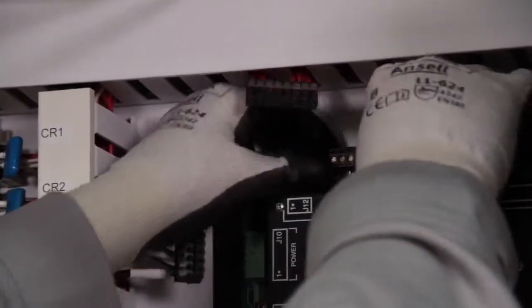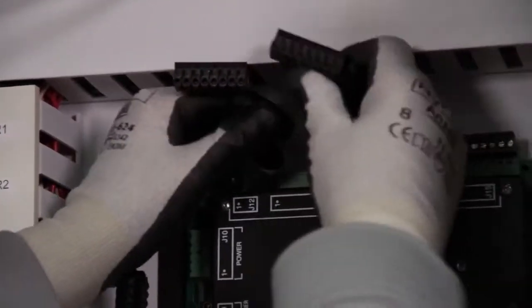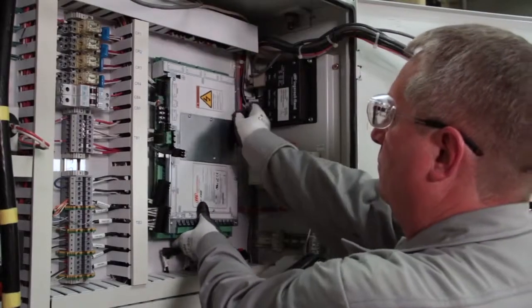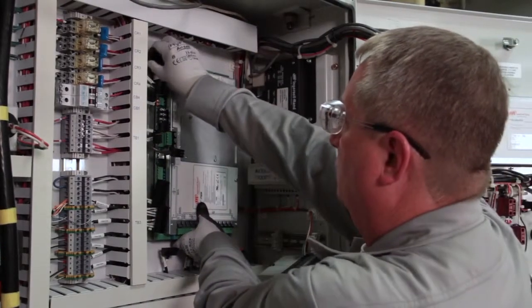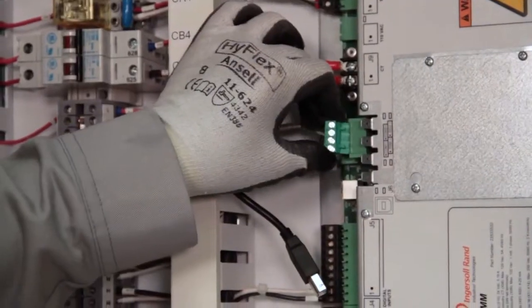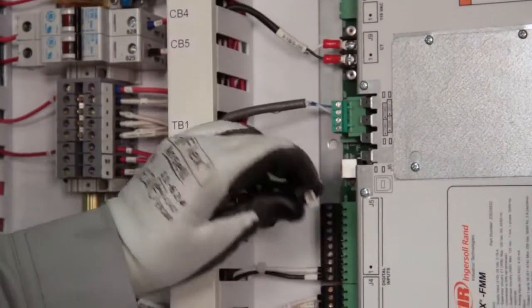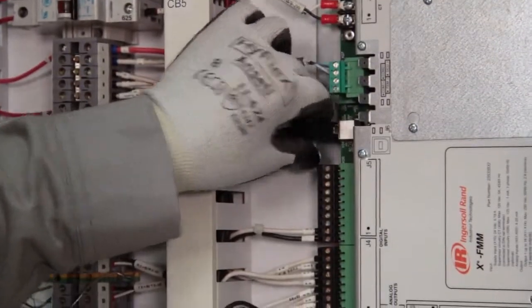All connectors are removed from the old BCM, and the new FMM is installed using the original mounting holes and hardware. To complete installation, attach the FMM connectors to the BCM, and connect the COM cable from the DCU.